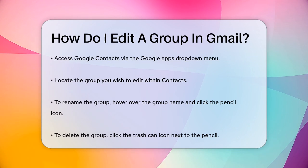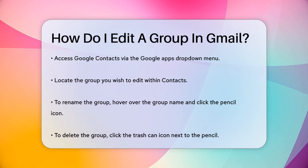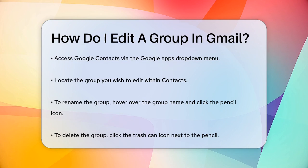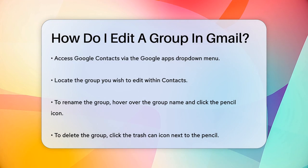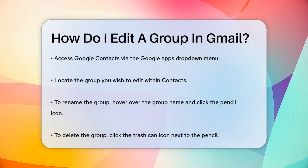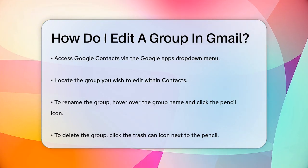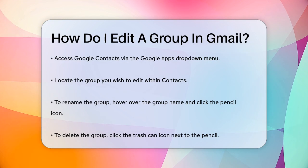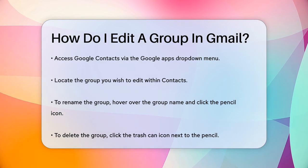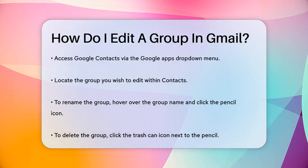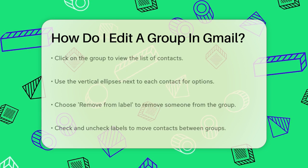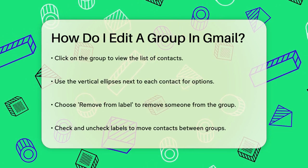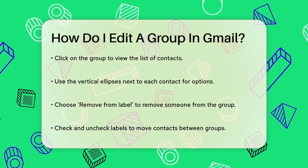First, you need to go to your Google Contacts. You can find this by clicking on the Google Apps drop-down menu and selecting Contacts. Once you're in Contacts, find the group you want to edit. To rename the group, hover over the group name and click on the pencil icon. This will allow you to change the name of the group.